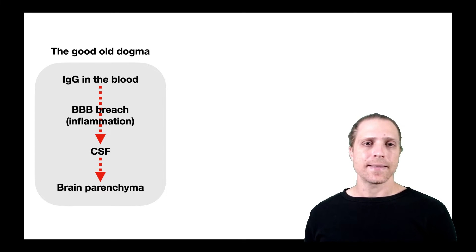Now, the good old dogma that pertains to the presence of antibodies and antibody-producing cells in the brain claimed that first there are immunoglobulins of the type of IgG, for example, in the blood, and pending some sort of a breach of the blood-brain barrier, potentially through some sort of systemic inflammation caused by a pathogen, these antibodies then can migrate into the CSF, the cerebral spinal fluid, and from there penetrate the brain parenchyma.